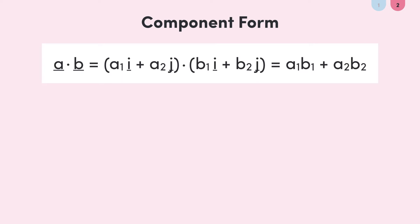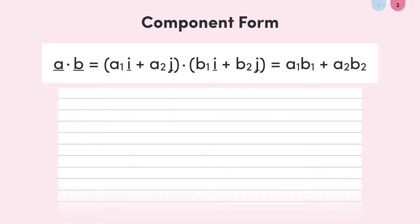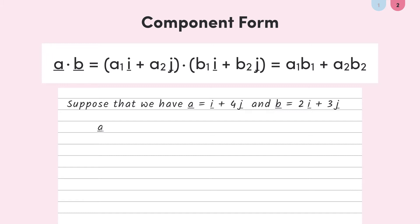Let's take our example from earlier but now with our vectors in component form. If we want the dot product between the two vectors, we first multiply the numbers in front of the two i's — 1 times 2. Remember, if it's just an i with no number in front, this is just the same as saying there's a 1 there. Then multiply the numbers in front of the j's together, 4 times 3, and add this to our result. Our answer is again 14.